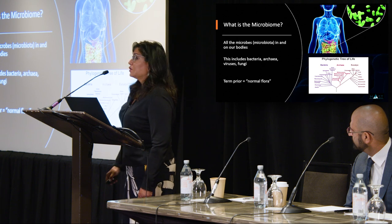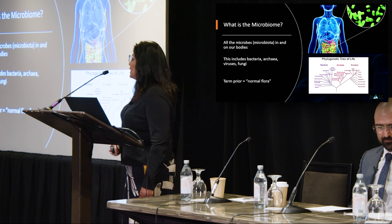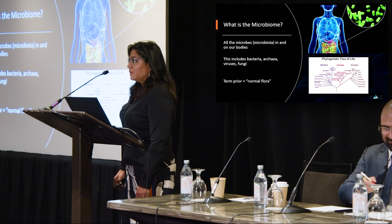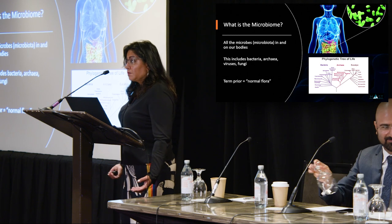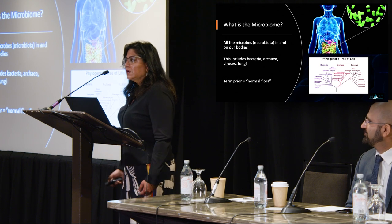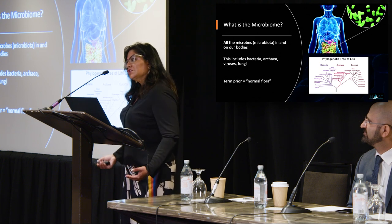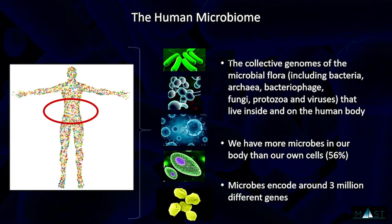There's a third branch called archaea, which were initially grouped with bacteria but are now thought to be very different. They have a specific role in humans — they are the organisms that produce methane. Viruses are also part of our microbiome, though they aren't considered part of the tree of life unless they've hijacked another organism. So bacteria, archaea, bacteriophages, fungi, protozoa, and viruses all live in and on us.